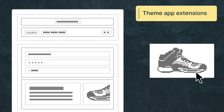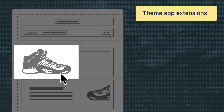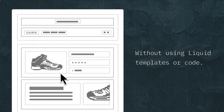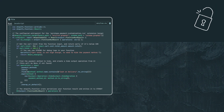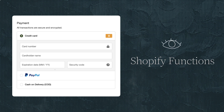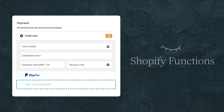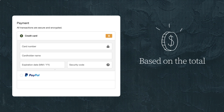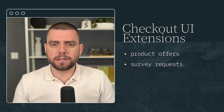Theme app extensions allow merchants to add dynamic elements to their themes without using liquid templates or code. Checkout UI extensions offer buyers a customized checkout experience. With checkout, you can also use Shopify Functions to customize payment options, add fully customized discounts, and more. In this example, Shopify Functions is used to hide a payment option offered to customers at checkout, based on the total value of their cart. You can add product offers, survey requests, and track customer behavior with web pixels and post-purchase extensions.